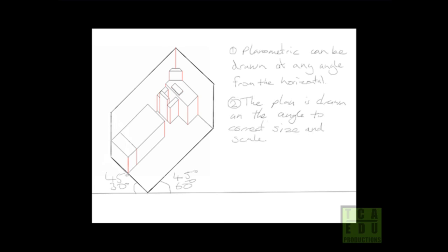However it would then also be rotated and drawn at the angle as described in rule 1. So rule 2 would be the plan is then drawn at the angle to correct size and scale, and this is what that would look like in this case.